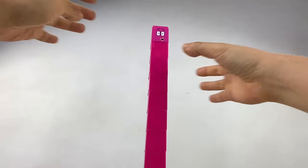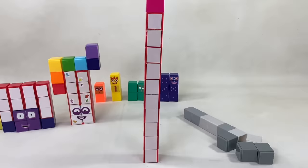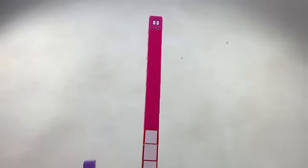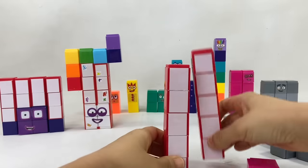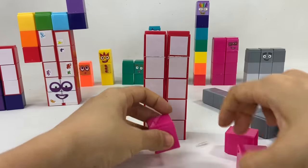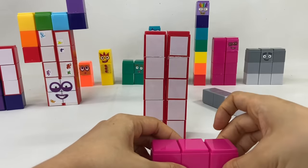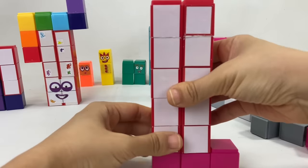There's number block 18. Wow, he's really tall. 18 is a super rectangle. That means he can make lots of rectangle shapes with his blocks, just like 12.